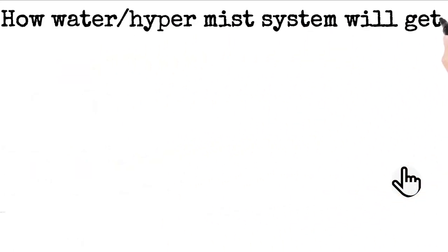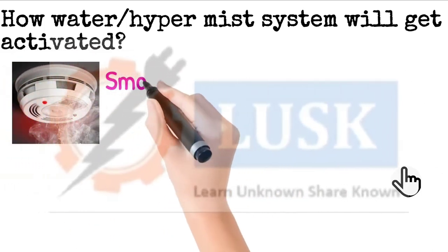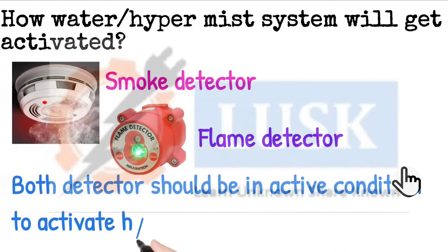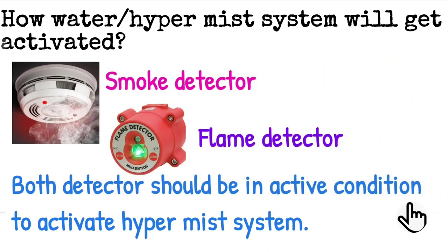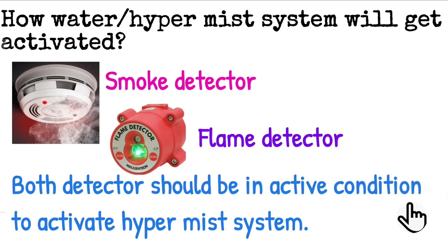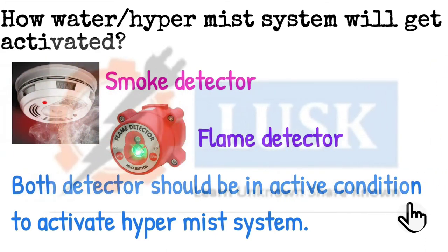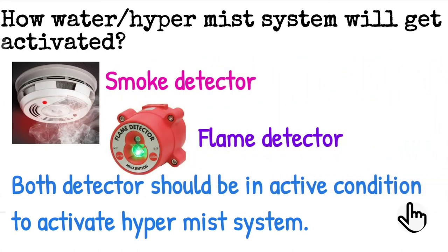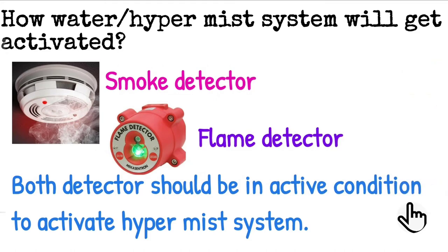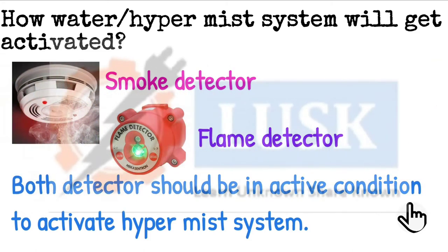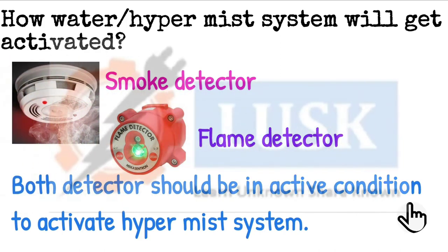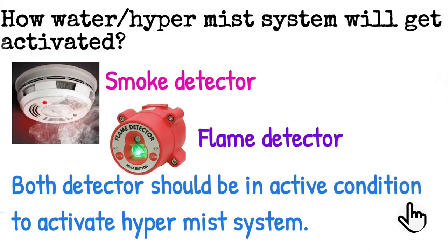How will watermist system get activated? There is smoke sensor and flame sensor. Both sensors should get activated simultaneously, then only hypermist system will activate. If only smoke is activated, water will not come. Or only flame is activated, mist will not come. Both should activate, both should be in alarm condition. They give dual sensors because maybe there will be a false alarm. When engine is running, maybe from the exhaust line some smoke will leak. Due to that, watermist should not activate. For that purpose they give dual sensors. When both are activated, then only water system will start working.